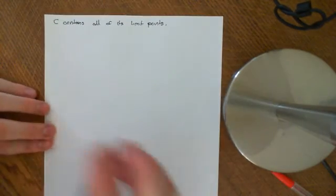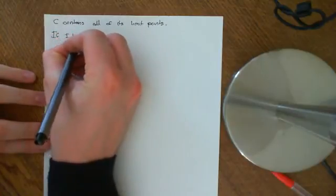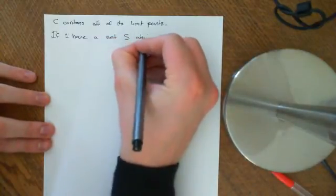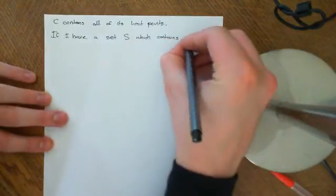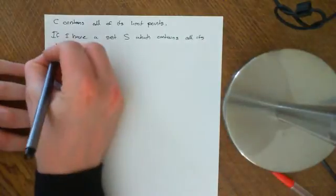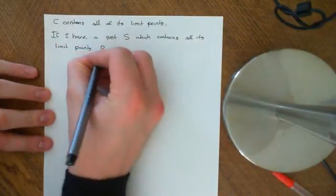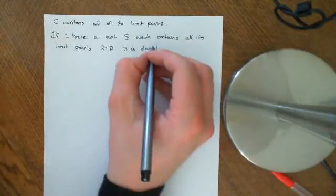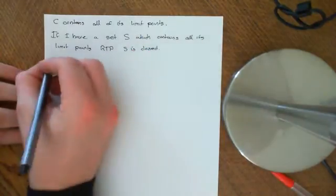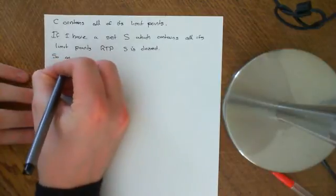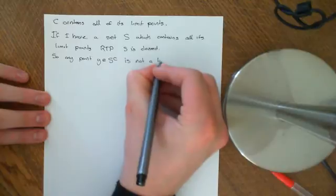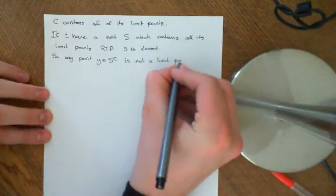Now let's prove the other direction. We want to prove that if I have a set S which contains all its limit points, then it is closed. If S contains all its limit points, that means that any point Y which is an element of S complement is not a limit point of S — because S contains all its limit points.